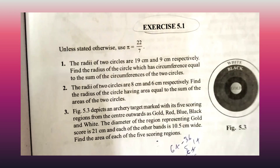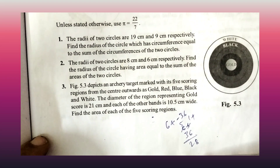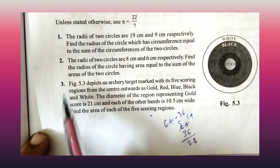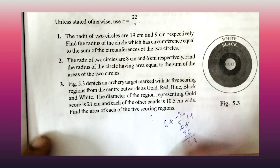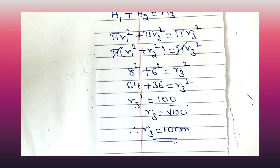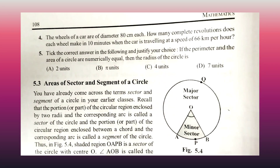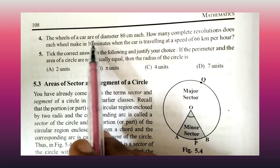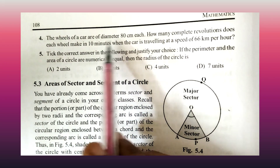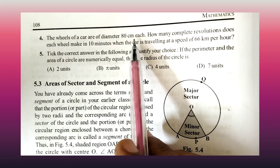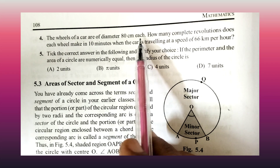The third question will be solved in the next video, so now I am moving to the fourth question. The wheels of a car are of diameter 80 centimetre each.